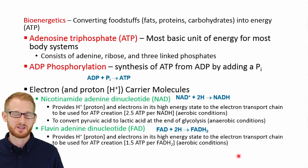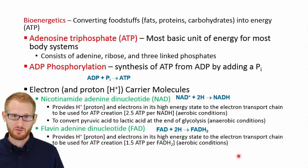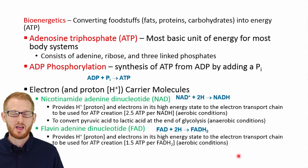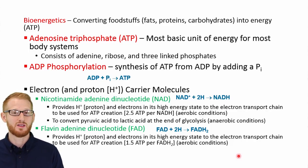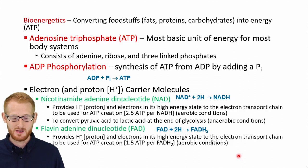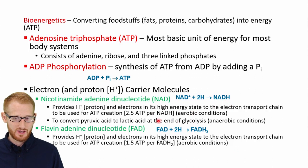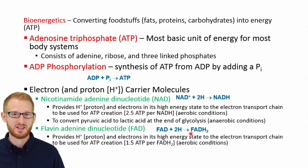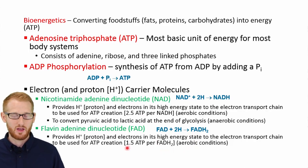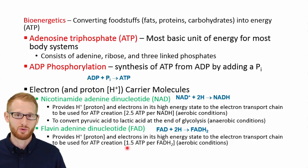Both of these are going to eventually be produced through different processes that we're going to talk about. They're going to go to the electron transport chain and be used to make ATP. From one NADH molecule, you can get about 2.5 ATP molecules, and from one FADH2 molecule, you can get about 1.5 ATP molecules, using aerobic metabolism in the electron transport chain.